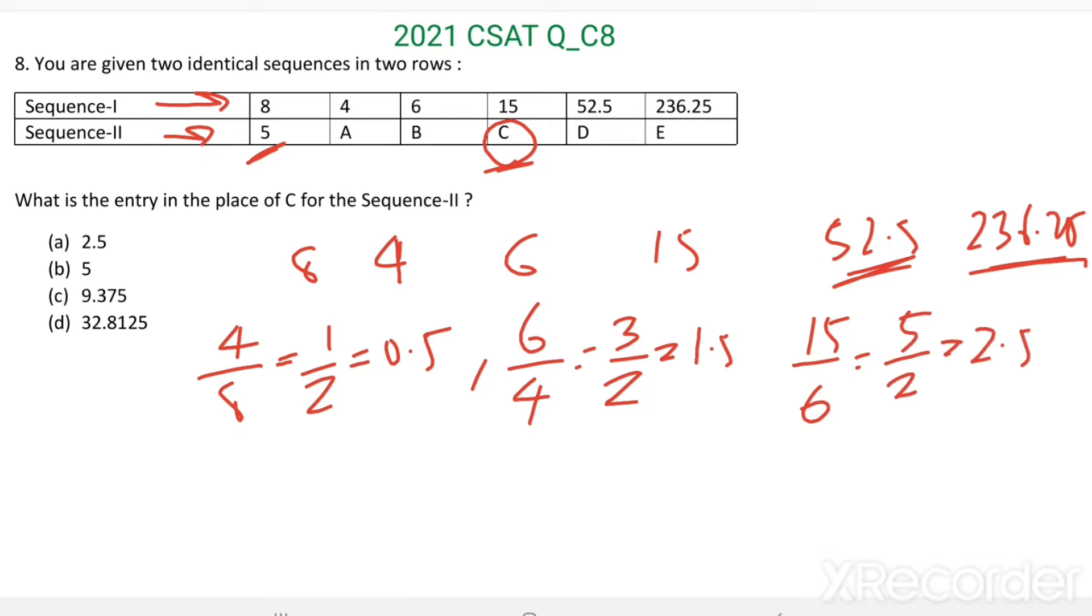If this is the pattern following, then here it is 1/2, here it is 3/2, here it is 5/2, then here it should be 2.5, then 3.5 which is equal to 7/2.